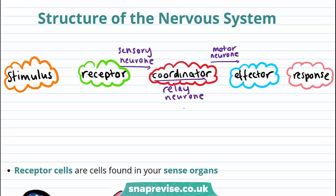Now we know how important the nervous system is, let's talk about its structure and how it enables it to fulfil its job. Information is transmitted from the stimulus — remember, stimulus is just a change in the environment — to the receptor. Receptors are cells that detect the stimuli. This is then transferred to the coordinator, which includes the brain and the spinal cord, making up the CNS, the central nervous system.